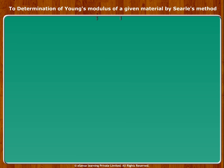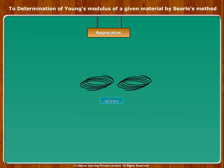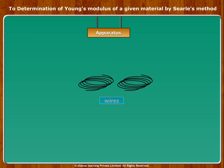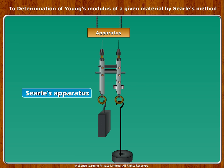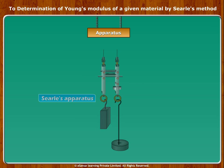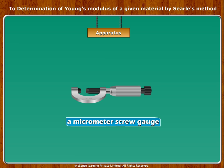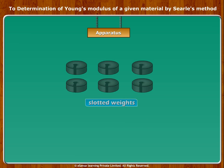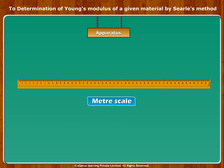Apparatus: We require two identical wires of the same material, same length and same diameter. Searle's Apparatus, a micrometer screw gauge, slotted weights, and a meter scale.